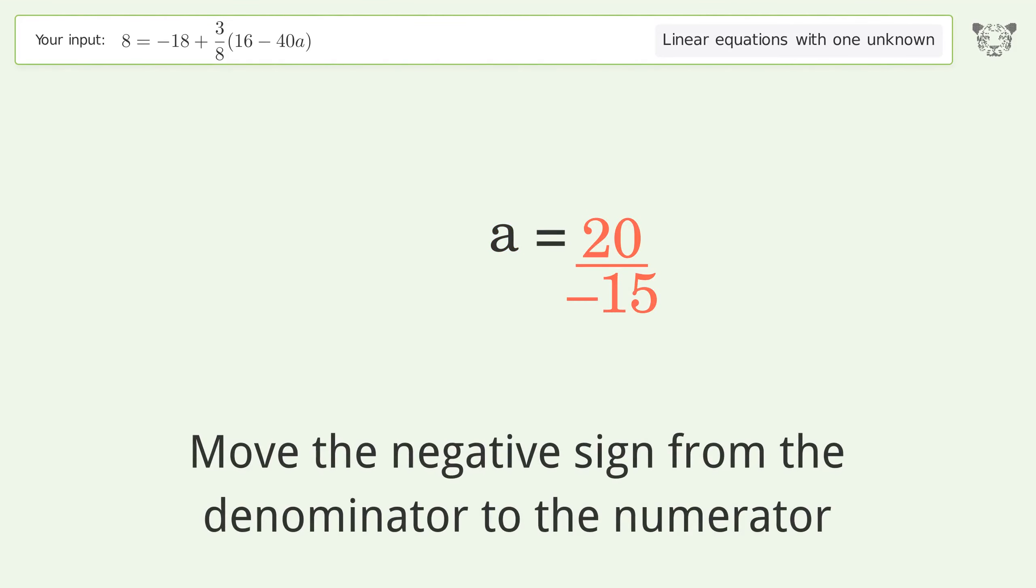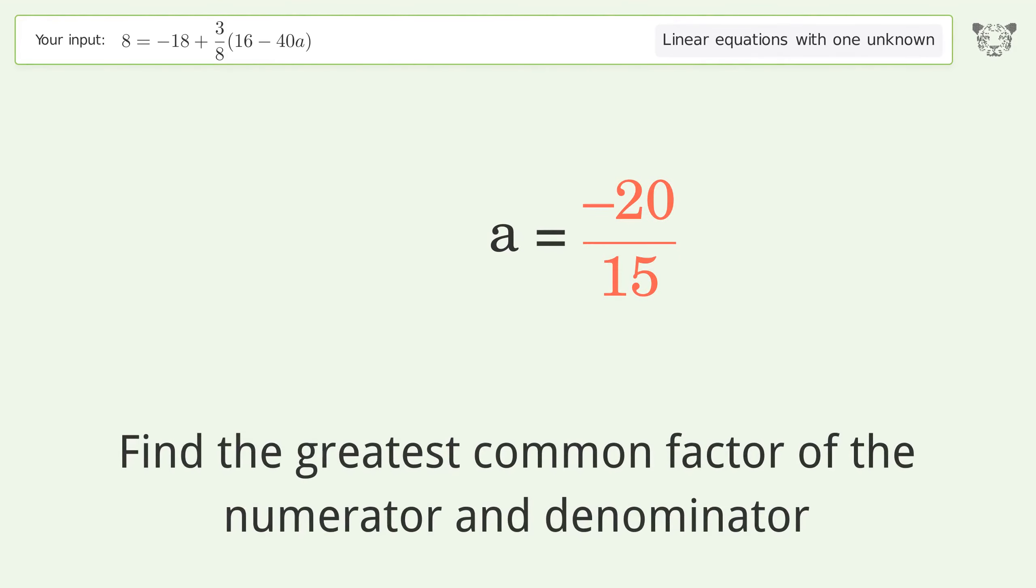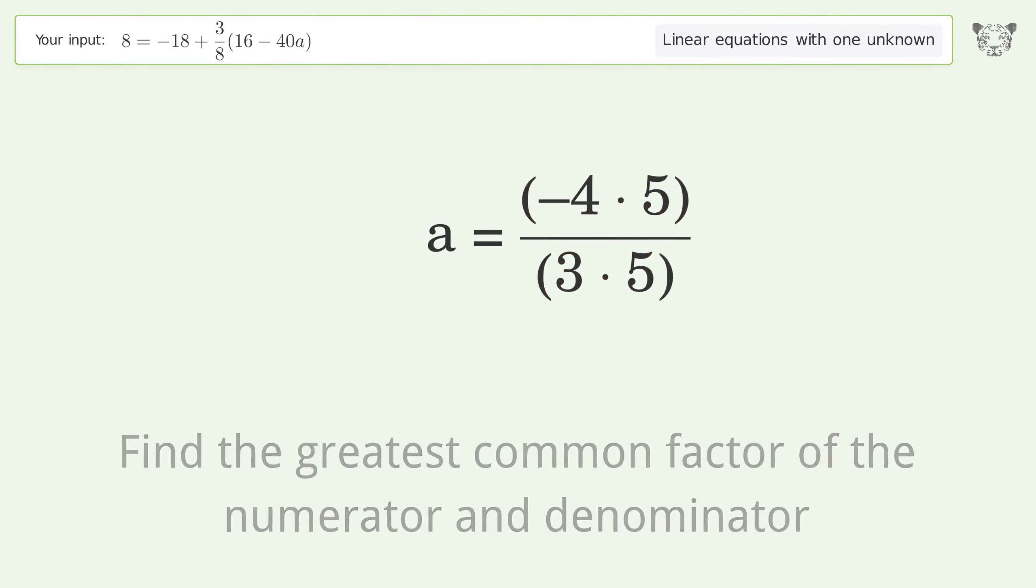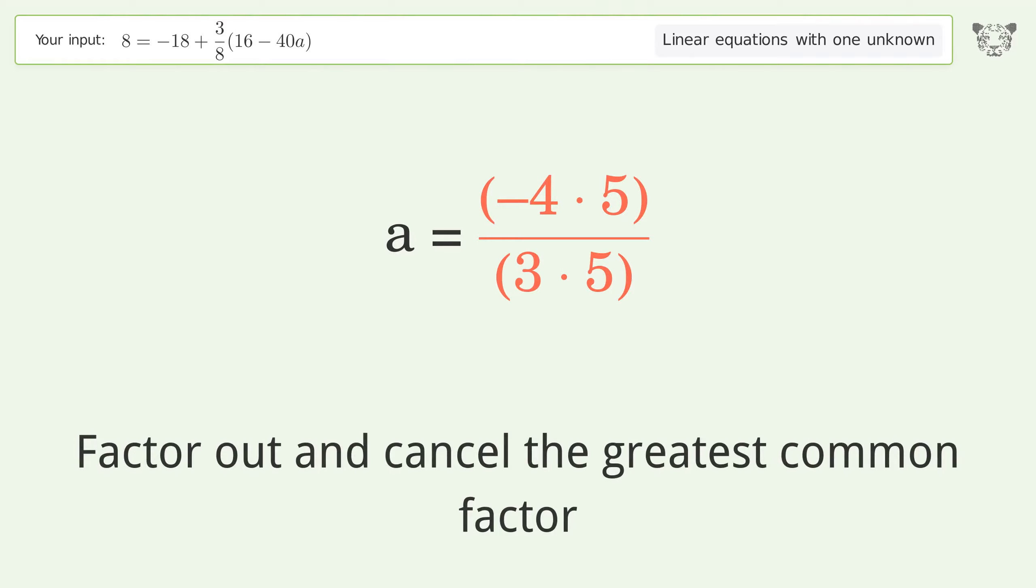Move the negative sign from the denominator to the numerator. Find the greatest common factor of the numerator and denominator. Factor out and cancel the greatest common factor.